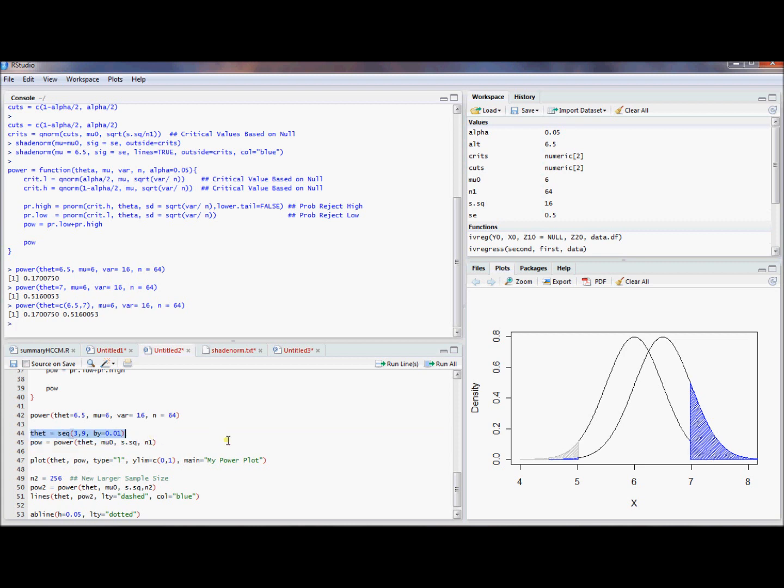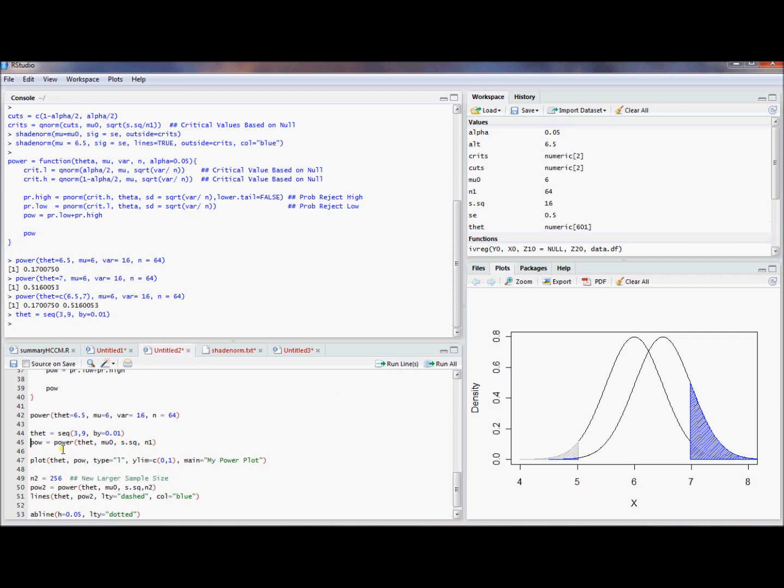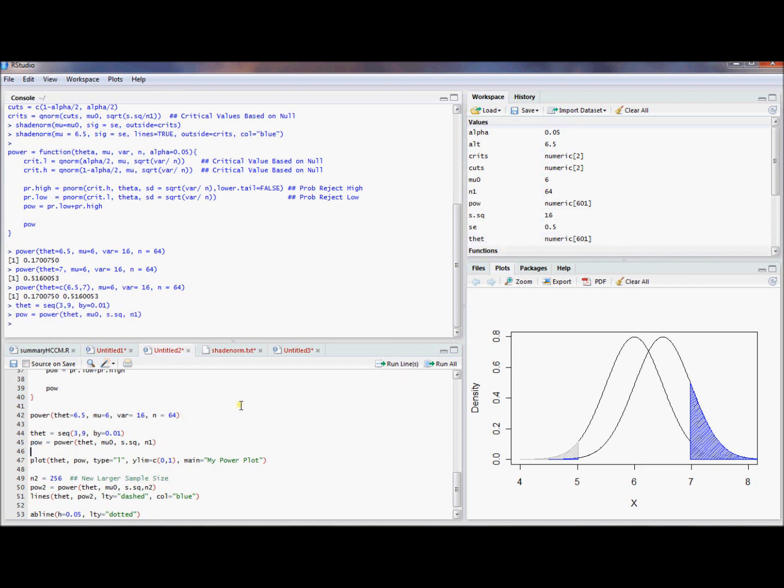So for example, maybe I'll define theta to be the sequence of numbers from 3 up to 9 in .01 increments. I can use this power function and then store the resulting vector into an object called pow. So let's run this line. And so now I have an object called pow. It's the same length as theta. And this gives me the power for each value of theta.